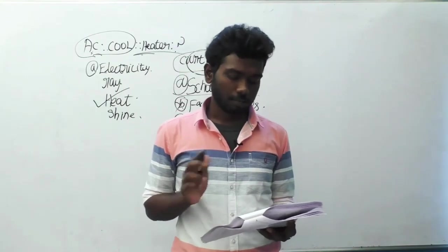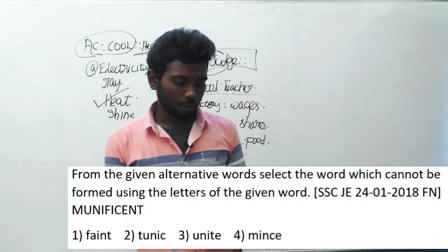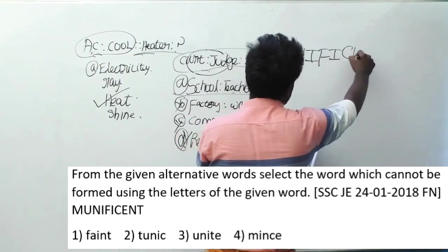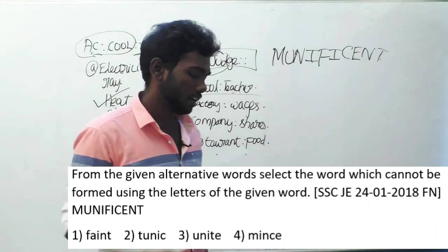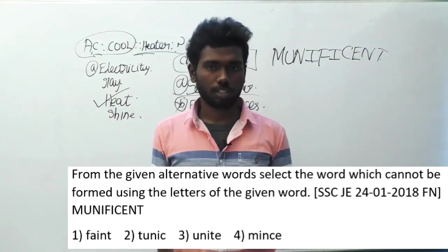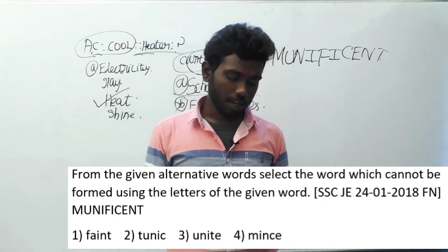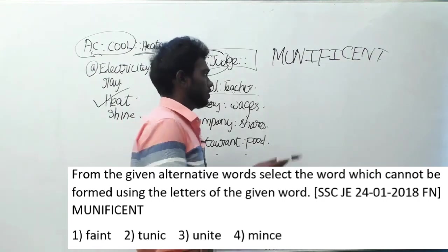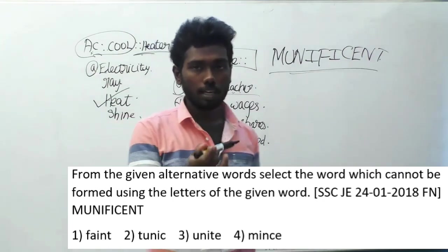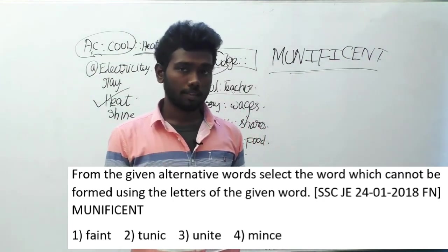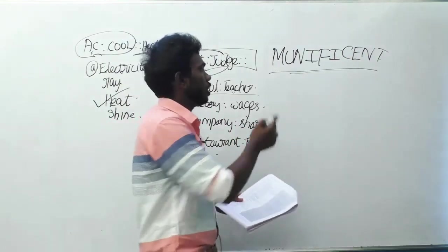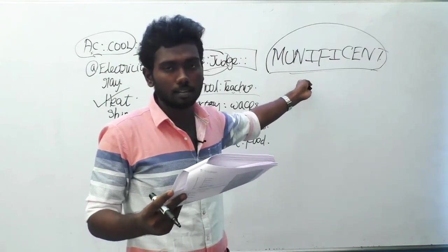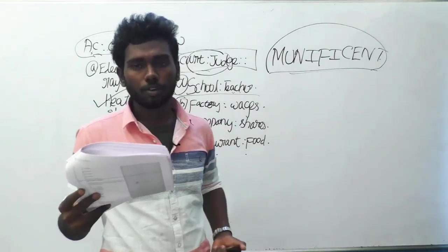Let's move on to question 163. From the given alternatives, select the word which cannot be found using the letters of the given word. The word is munificent. This question was asked in SSC JE, 24th January 2018, forenoon session. Options are option A faint, option B unique, option C unite, and option D mince. Looking at option A, faint — the letter A is not present in munificent. So faint cannot be formed using munificent. The answer is option A, faint.